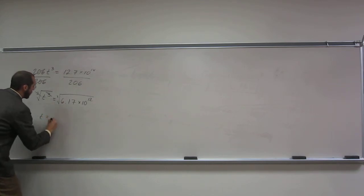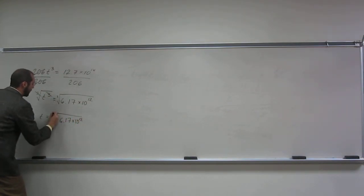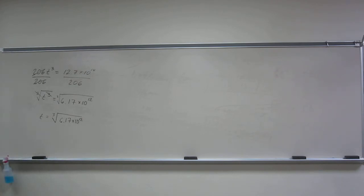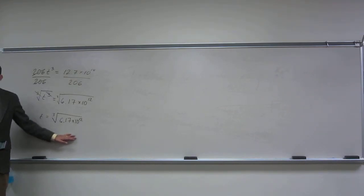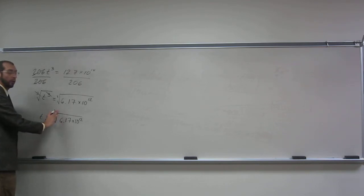It's going to be 6.17 times 10 to the 12 cube root. How do I do this on my calculator? That's the real question. To do this on your calculator, you want to think about it a little differently. Cube root is actually to the one-third.